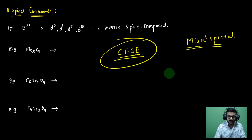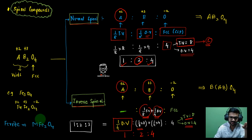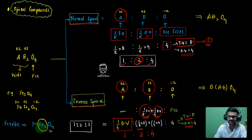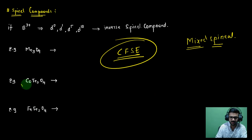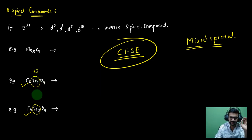One more important concept: if the central B-position metal is iron in +3 oxidation state with oxygen surrounding it, the compound is called a ferrite structure. For example, both FeFe₂O₄ and CoFe₂O₄ are ferrite structures because iron is present in the center in the +3 oxidation state.